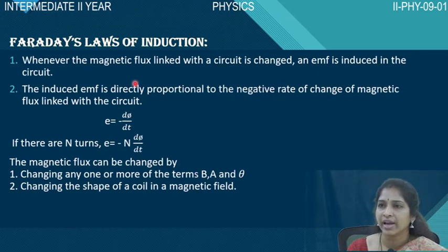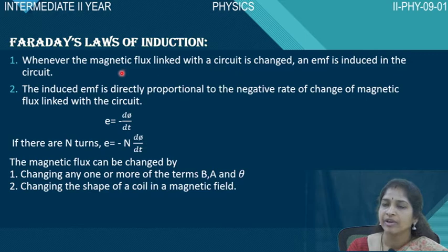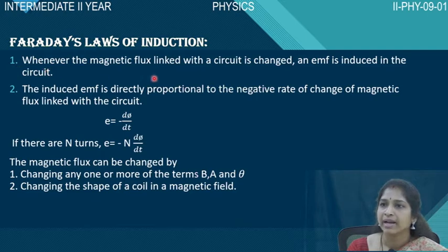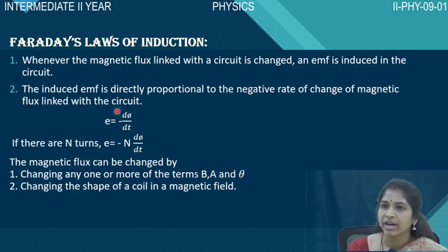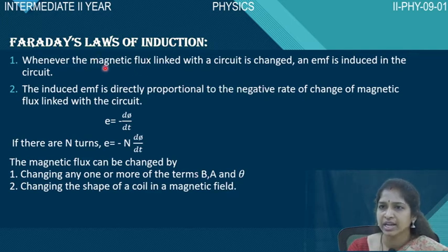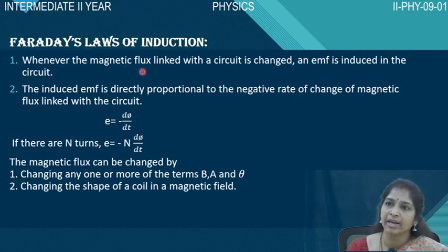From both experiments, Faraday concluded that when there is a change in the magnetic flux, an EMF is induced. This is Faraday's postulate: whenever the magnetic flux linked with a circuit is changed, an EMF is induced in the circuit. The change in magnetic flux — whether an increase or decrease — is denoted mathematically as dΦ/dt, indicating the rate of change of flux with respect to time.